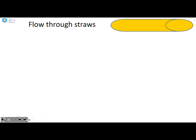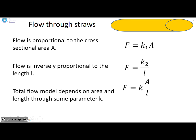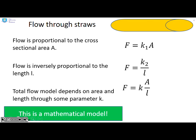Let's look at flow through straws more as an engineer. Flow is proportional to the cross sectional area A, so we can write an equation something like F, the flow, equals some constant K1 times the cross sectional area A. Flow is also inversely proportional to the length. We can write an equation something like flow equals K2 over L, where L is the length. If we combine these two, we get a final equation, something like flow equals some constant times the area divided by the length. This is clearly a mathematical model.